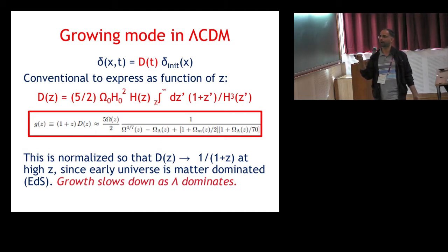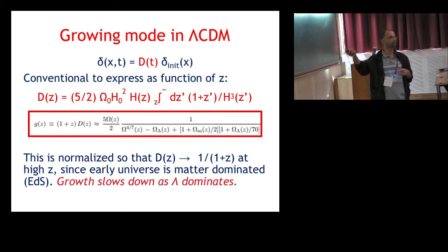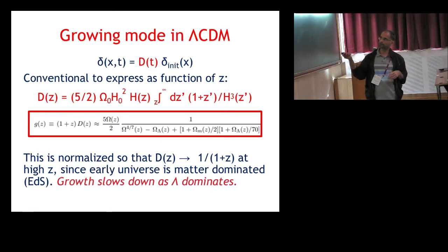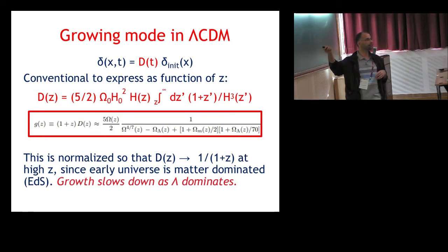By construction, this growth function is normalized so that as I go to high redshifts and early times, it becomes simply proportional to the scale factor, 1 over (1+z). This is because during matter domination the growing mode is proportional to t to the two-thirds, which is also the scale factor during matter domination. At late times, extrapolating to lower redshifts, growth slows down compared to the scale factor — you're growing closer to the regime where growth has essentially stopped.